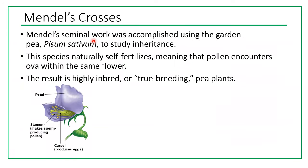Mendel's seminal work was accomplished using the garden pea, Pisum sativum, to study inheritance. This species naturally self-fertilizes, meaning that pollen encounters the ovum within the same flower. The result is highly inbred or true-breeding pea plants. This is how a garden pea flower looks — in this flower, as in many others, male and female reproductive organs are located in the same flower.